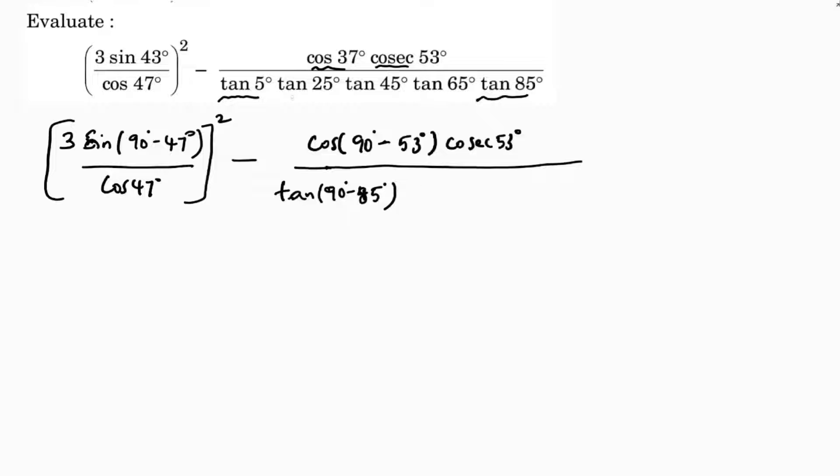If you see tan 25 and tan 65, in this I'll change tan 25. I'll write as tan 90 minus 65. And this one, tan 45 is 1, it's a standard one.